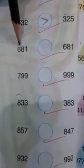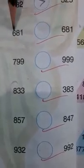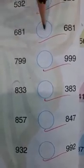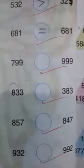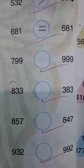Now 681 and 681. Both are the same, so 681 is equal to 681.